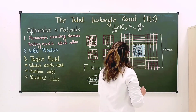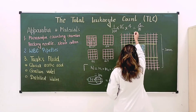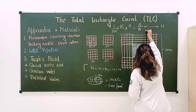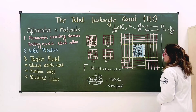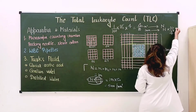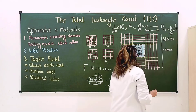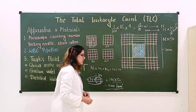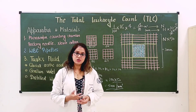Since we are counting in 4/10 mm³, to get the count per 1 mm³ we multiply N by 10/4. We also multiply by 20 because the blood was diluted 20 times. So the formula becomes N × (10/4) × 20 = N × 50. In this case, N = 100, so the result is 100 × 50 = 5000 WBCs per cubic millimeter of blood. This was all about how to perform the total leukocyte count.